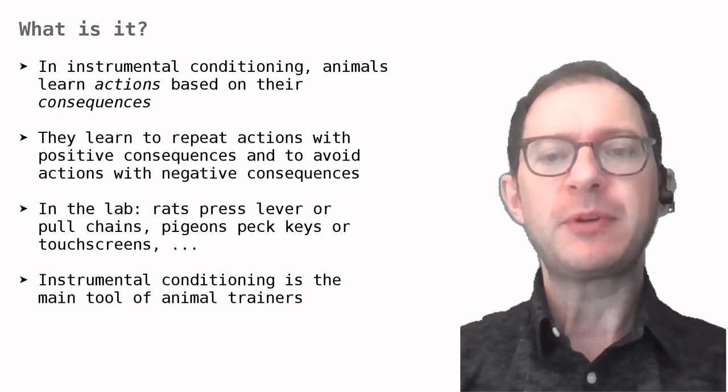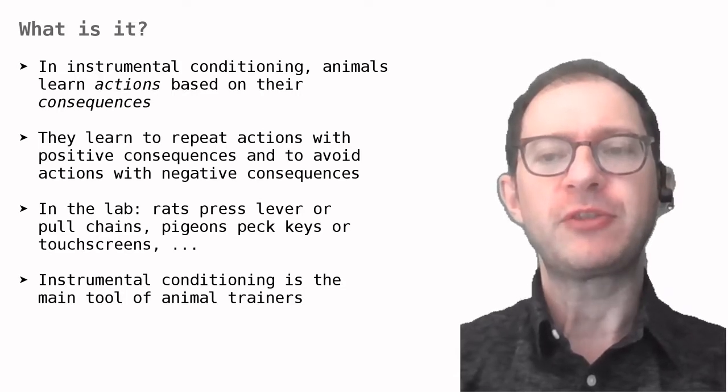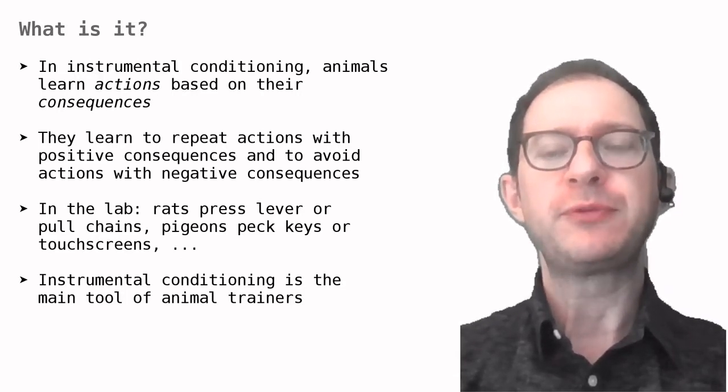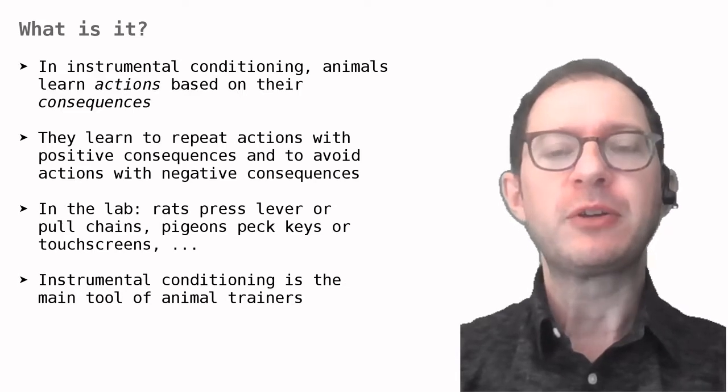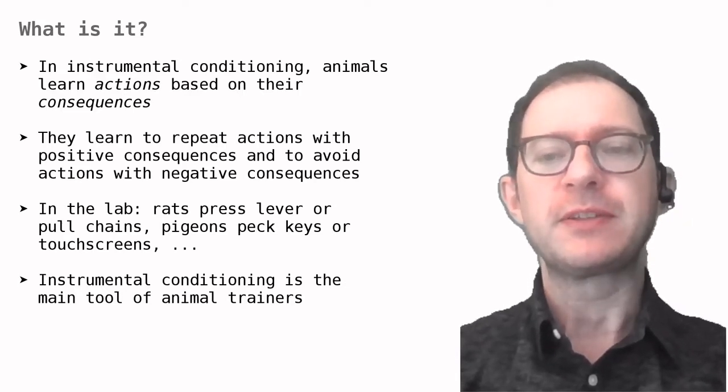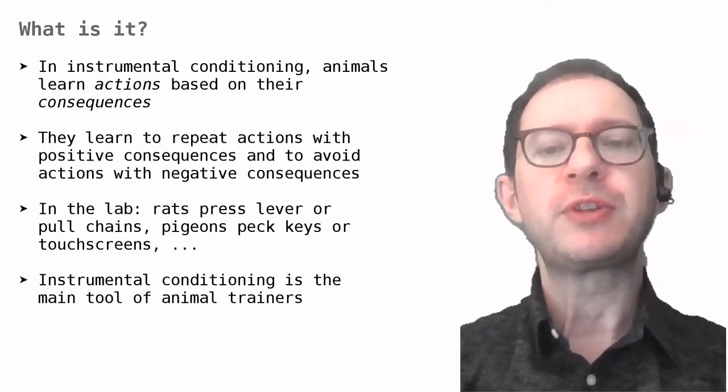The typical laboratory example of instrumental conditioning is a rat that learns to press a lever to get food, a positive consequence, or to avoid shock, a negative consequence. It is also common to train pigeons to peck a key or a touch screen.